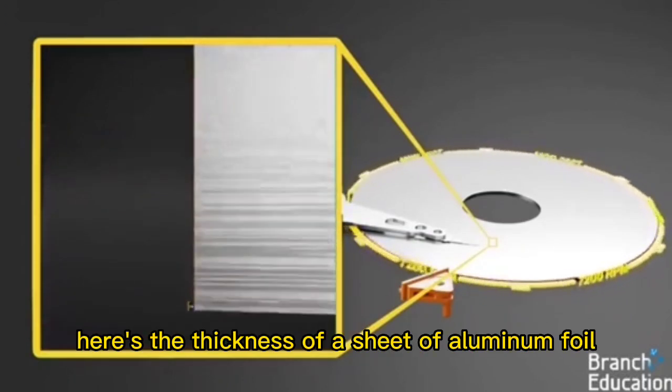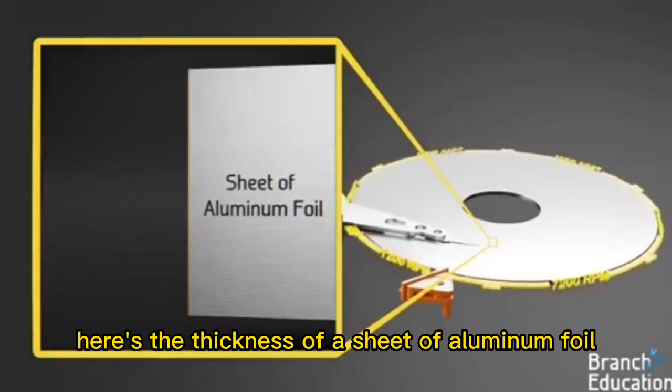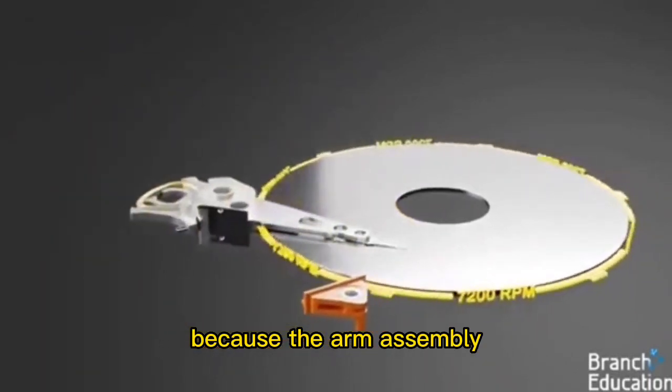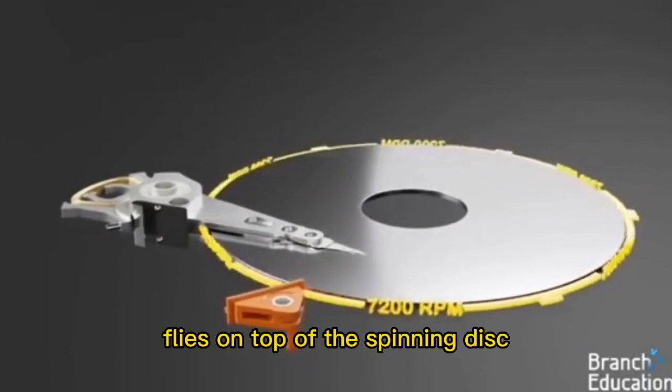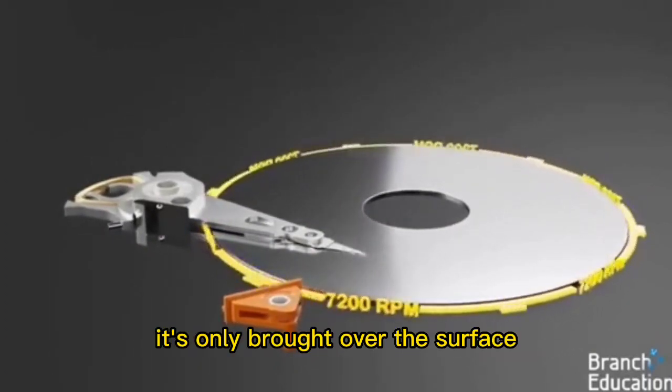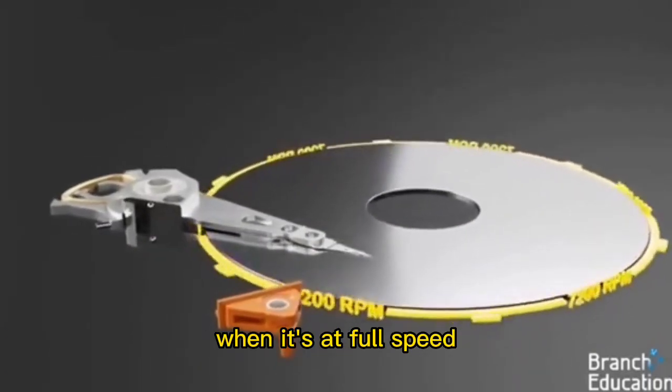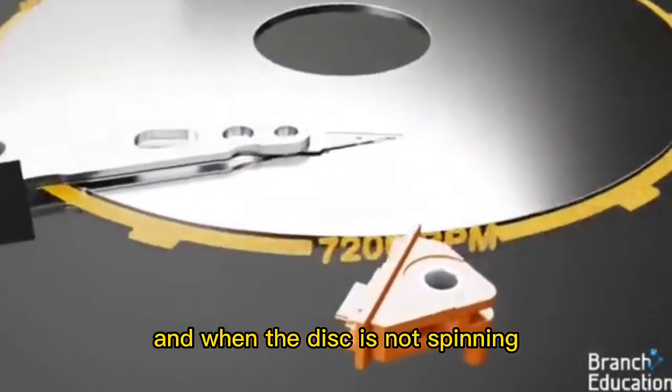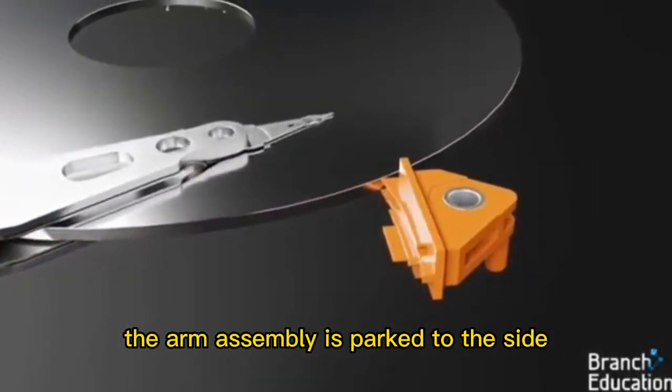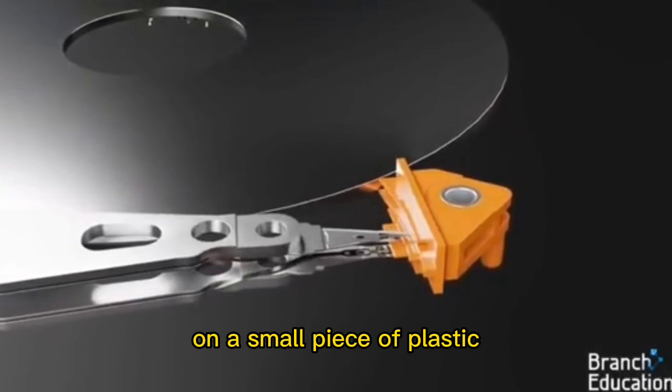For reference, here's the thickness of a sheet of aluminum foil. Because the arm assembly flies on top of the spinning disk, it's only brought over the surface when it's at full speed. And when the disk is not spinning, the arm assembly is parked to the side on a small piece of plastic.